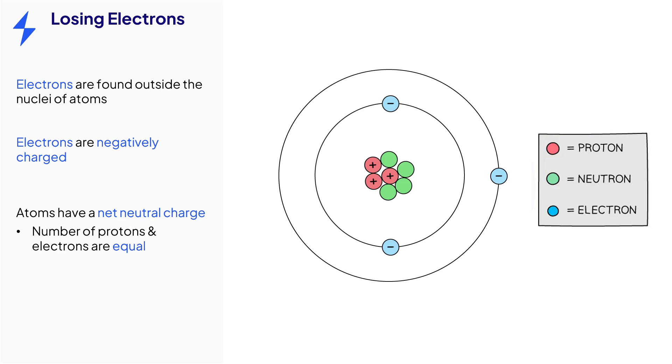Atoms have an overall neutral charge because there are the same number of protons and electrons in an atom. When electrons are transferred away from an atom there are more positive charges left than negative ones, and so the atom becomes an ion and it has a positive charge.